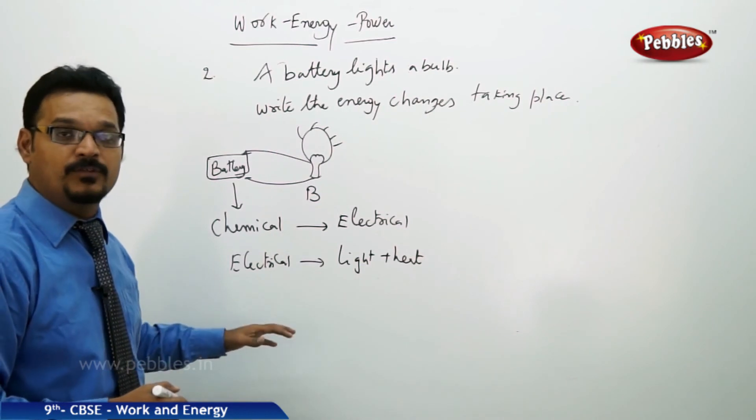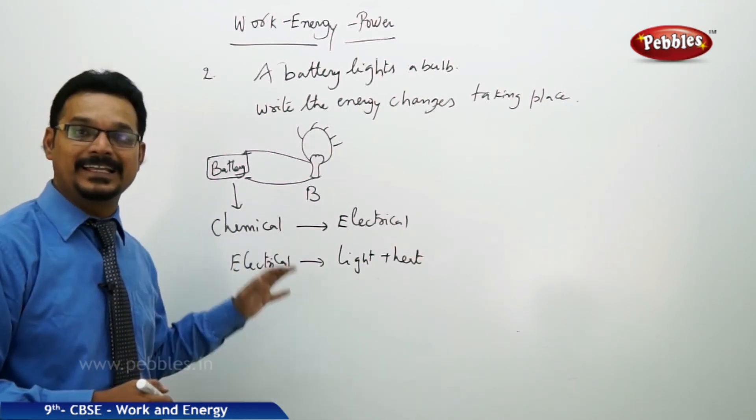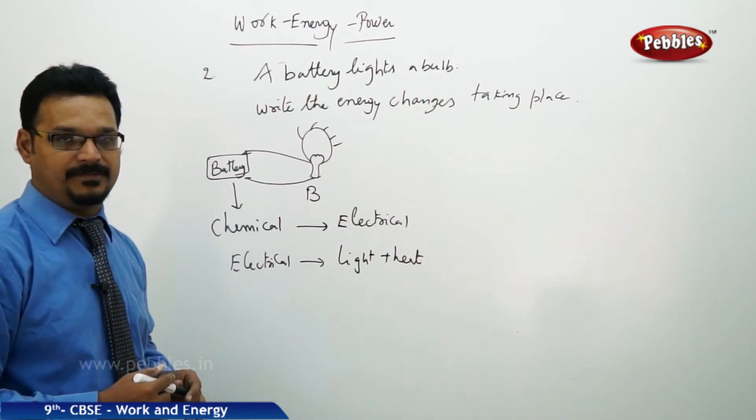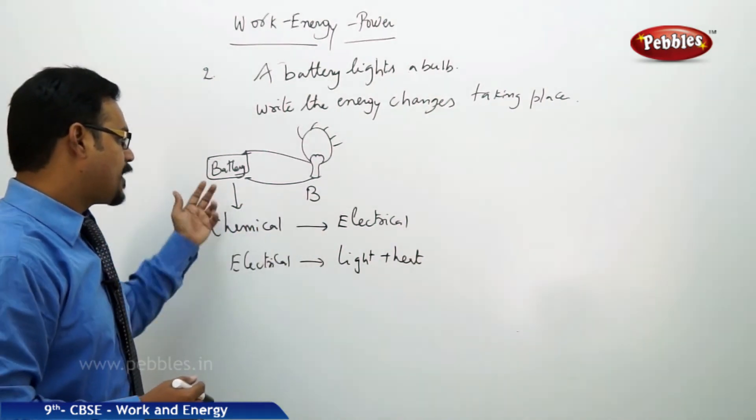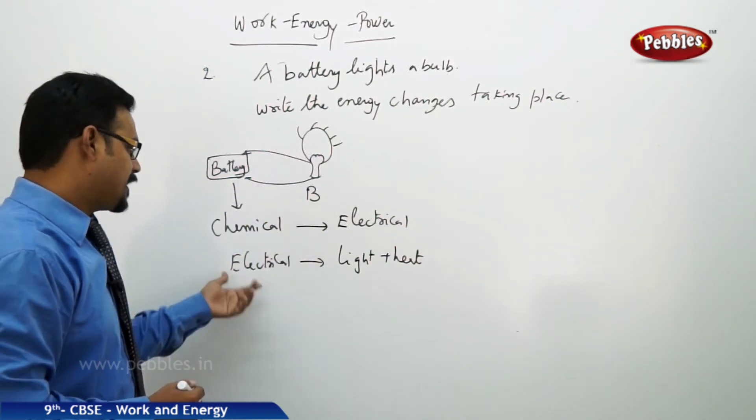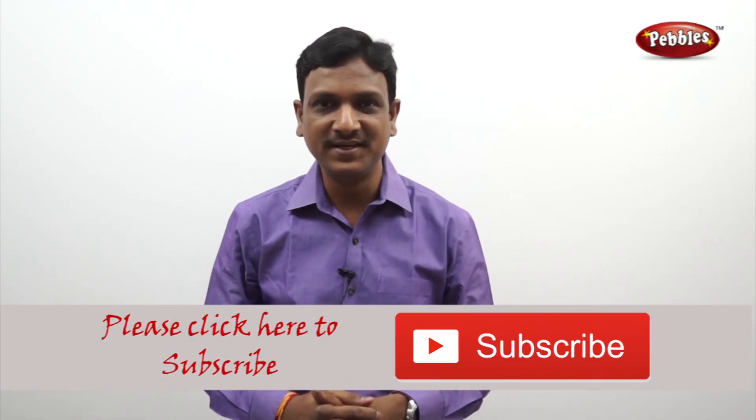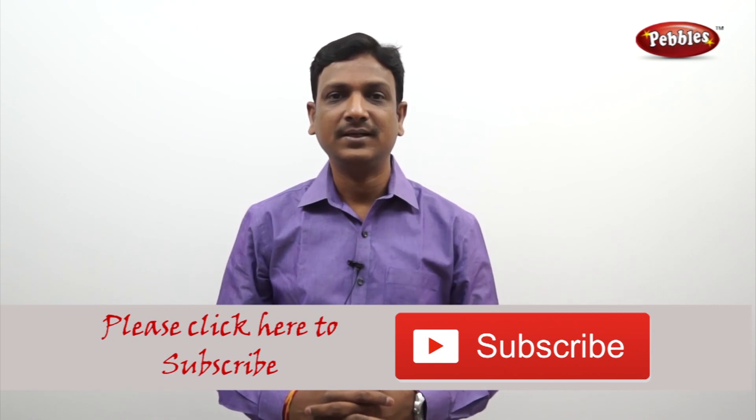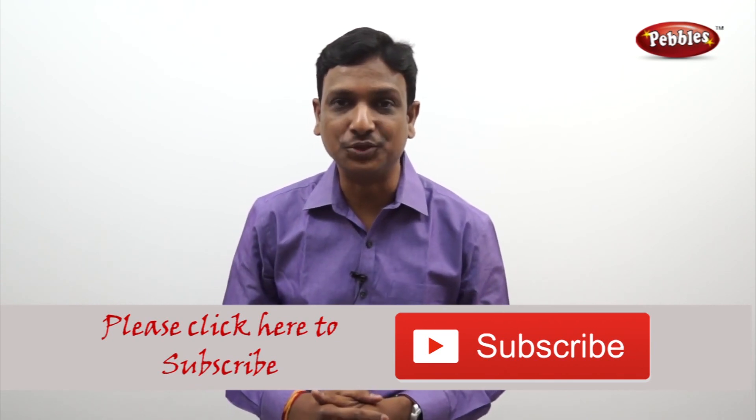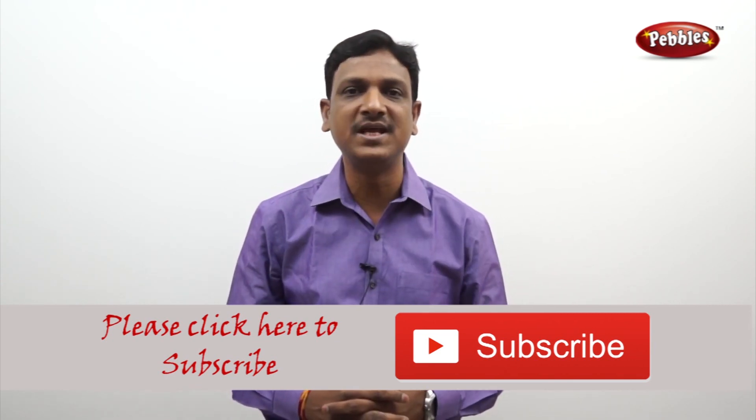So this is the energy conversions happening. We can confidently say that energy is conserved and not wasted. Chemical to electrical in the battery, and in the bulb electrical to light and heat. If you like this video, please give a thumbs up and subscribe to our channel to get more videos on CBSE syllabus.